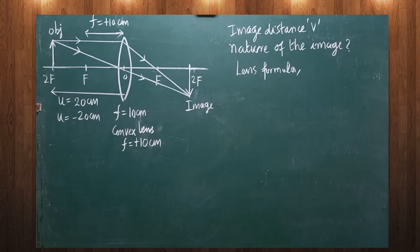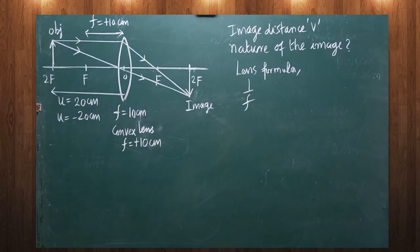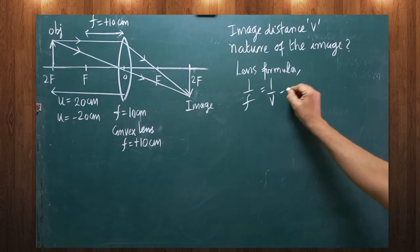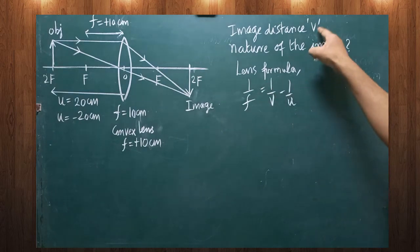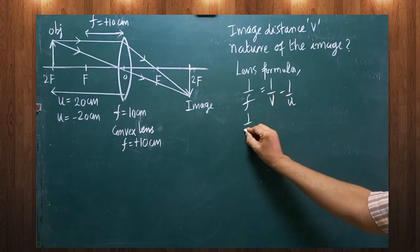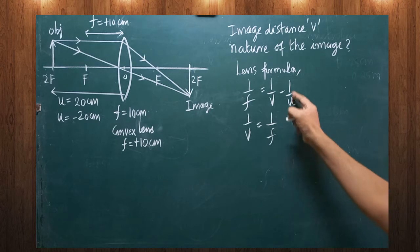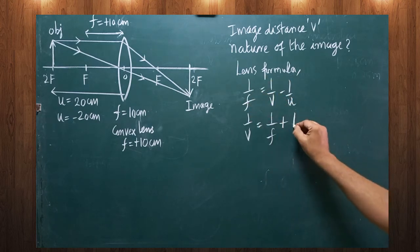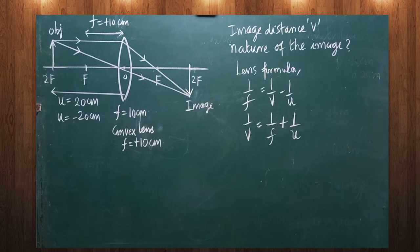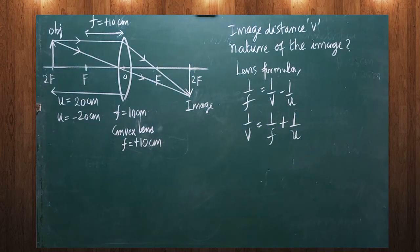The lens formula is: 1 by f equals 1 by v minus 1 by u. Since image distance is required, we keep 1 by v on one side: 1 by v equals 1 by f plus 1 by u. Now substitute the known values of f and u to get the answer.